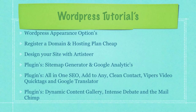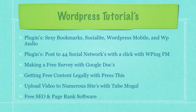Then I cover Dynamic Content Gallery, Intense Debate, and the MailChimp plugin for WordPress. Then I go on to cover Sexy Bookmarks, Socialite, WordPress Mobile, and WP Audio. Then I show you how to post to 44 different social networks with one click using a free service called WPingFM, how to create a free survey tool in your website using Google Docs, how to legally get free content and post it into your WordPress website, how to upload video to numerous sites with TubeMogul, and a bunch of free SEO and PageRank websites and software kits.